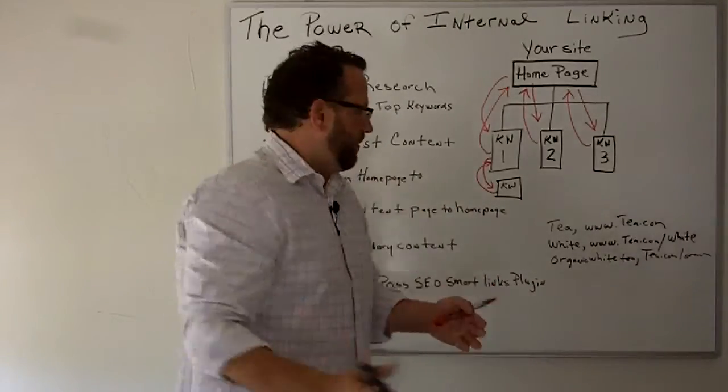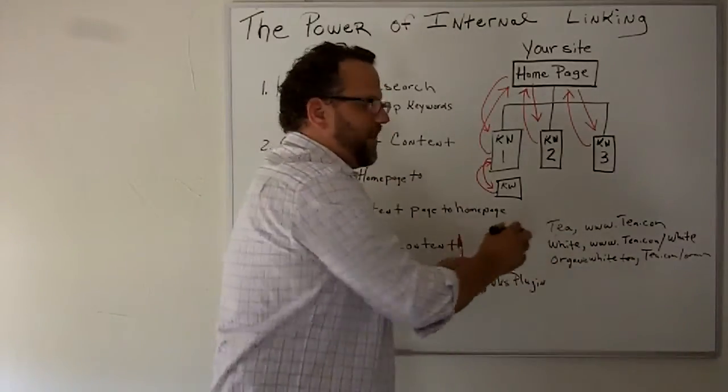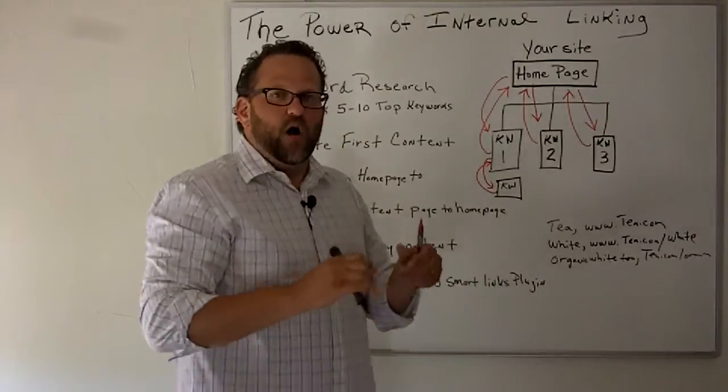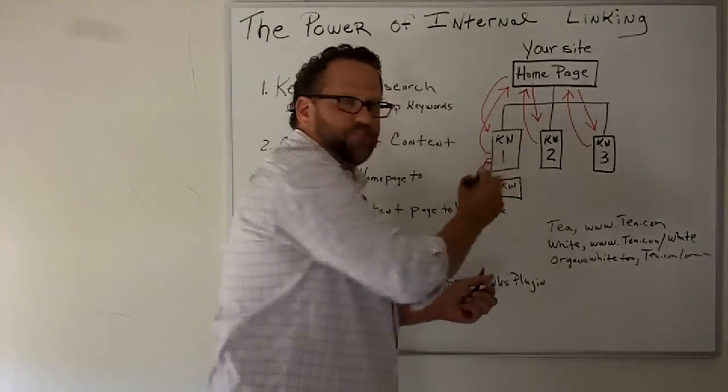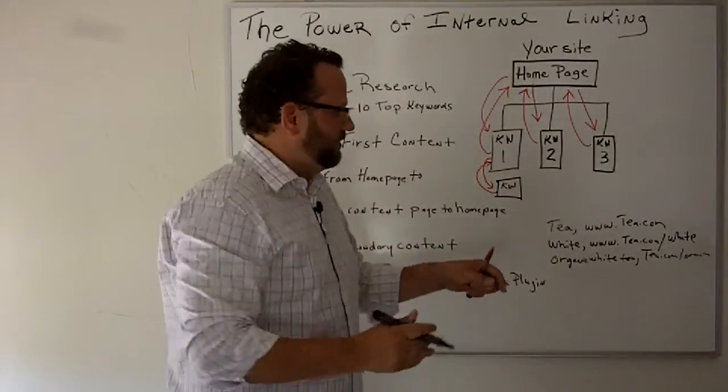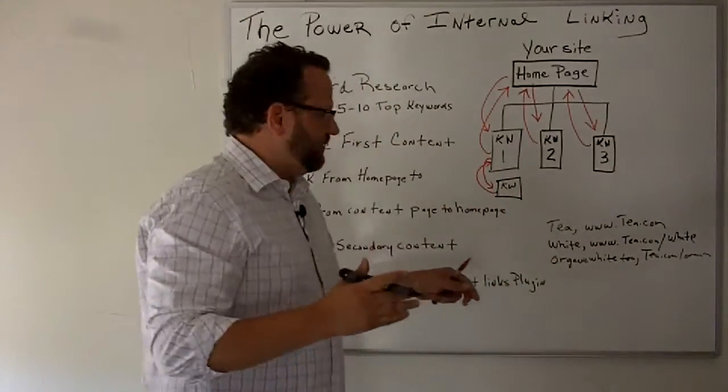So now what will happen is any time you create any other content on your website and naturally you write the word organic white tea or white tea, your WordPress site will automatically anchor text that keyword and it will automatically link back to whichever page you wanted to go to. So it does it automatically which is really cool...